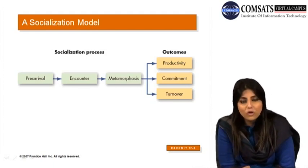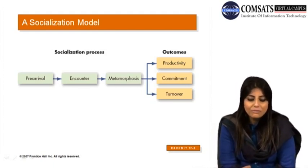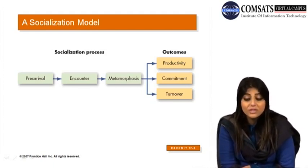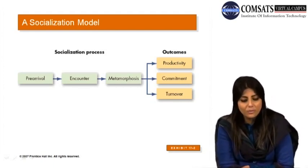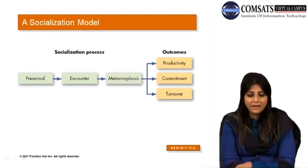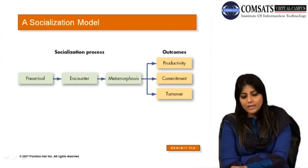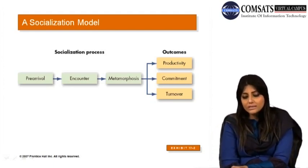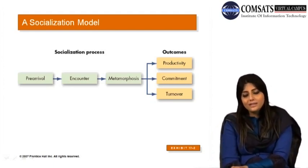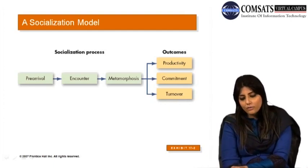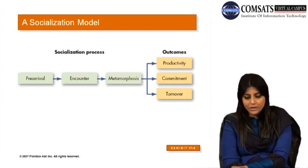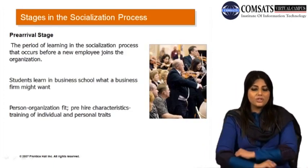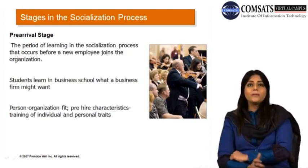The socialization process has three stages: the pre-arrival stage, the encounter stage, and metamorphosis, each leading to a number of outcomes. The pre-arrival stage is when the individual's norms and values are formed even before entering the organization — for example, business school students are familiarized with the requirements and cultures of different firms that hire MBAs, and are sometimes given short company visits as part of their coursework.